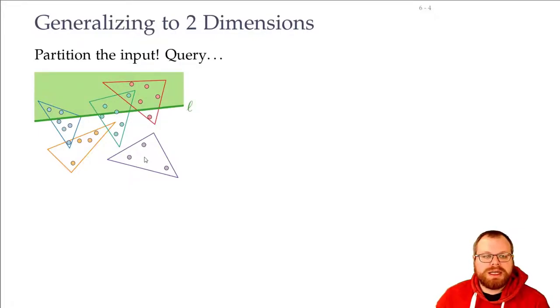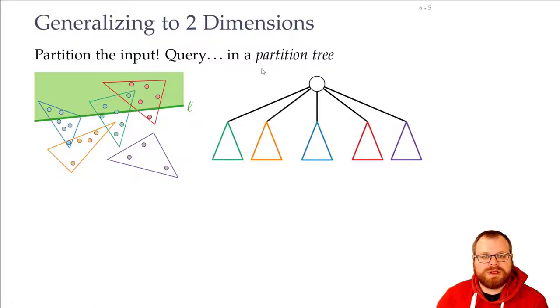Now if we have this then we want to do a query. Our query looks like this—we have some half plane that's defined by some line l. How would our data structure here look like? Again we would want to have a binary search tree. So in the root we have all the points and then we have a child for each of these triangles. This is a so-called partition tree. And now the red triangle knows how many points are in my triangle—all these red points here. We don't count this one because that's counted here.